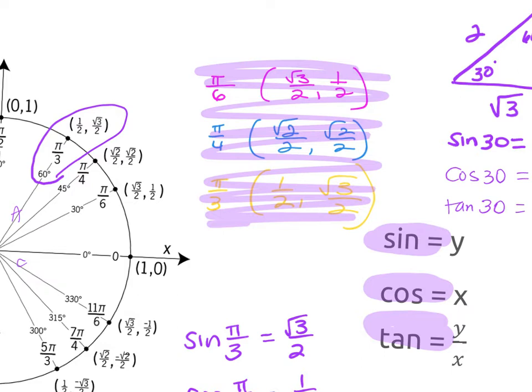The reference angle is going to be a whole number — putting it on the x-axis — or an over-6, over-4, or over-3, or an over-2 which puts it on the y-axis. It has to be one of those to do it without a calculator. A whole number, an over-2, or an over-6, over-4, over-3.